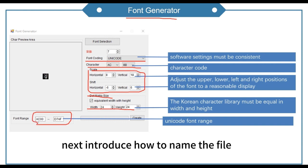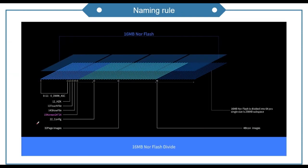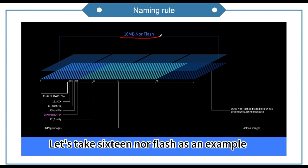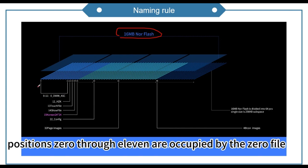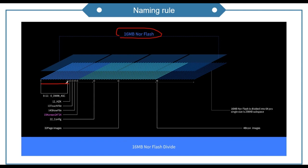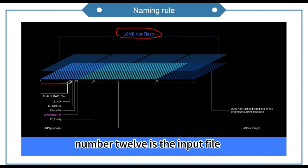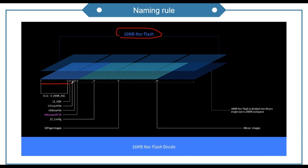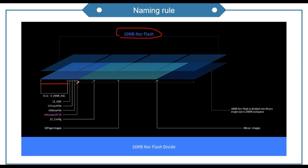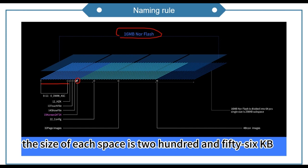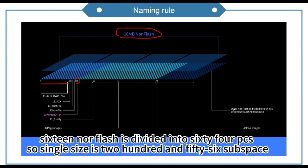Next, let's introduce how to name the file. Taking 16MB flash as an example: positions 0 through 11 are occupied by the system file; number 12 is the input file; number 13 is the touch file; number 14 is the display file; and from number 15 onward it is free to use. The size of each space is 256 KB, and the 16MB flash is divided into 64 pages, so a single page size is 256 KB.